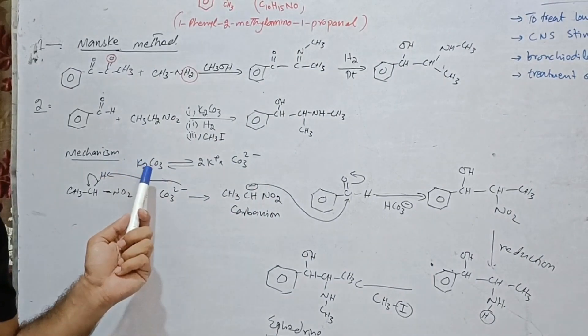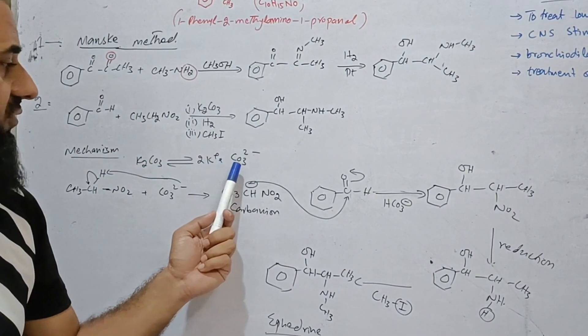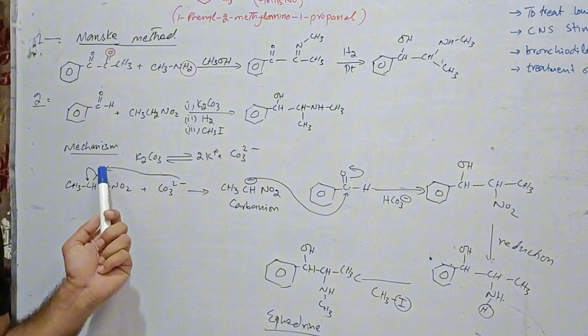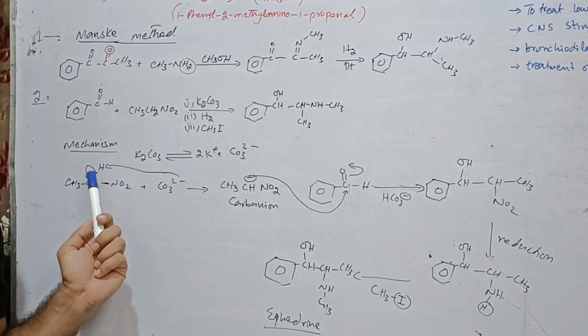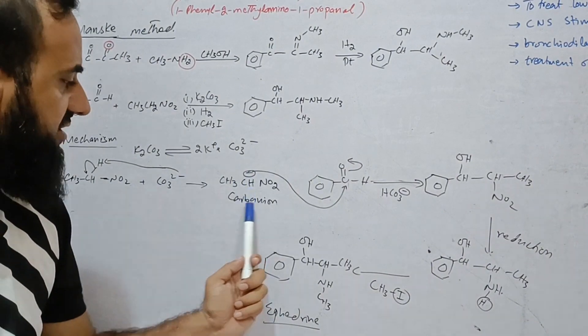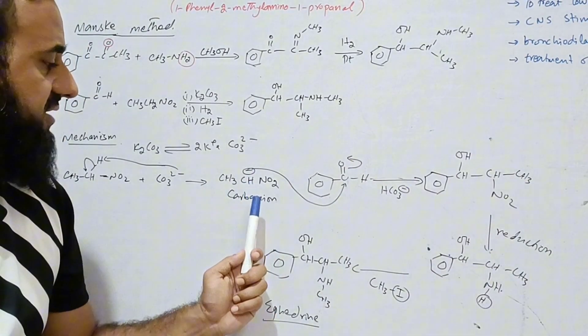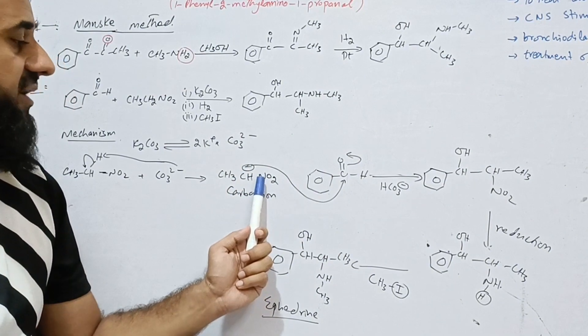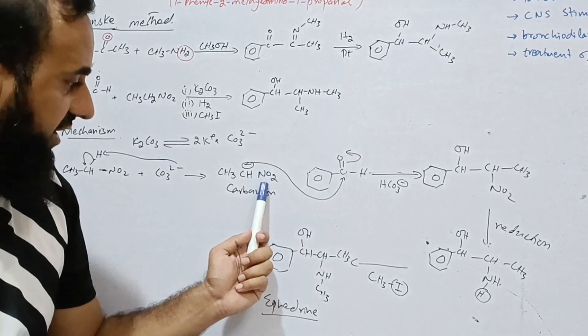If we see the mechanism, potassium carbonate provides carbonate, which extracts hydrogen from the nitroethane and carbanion is formed. This carbanion is resonance stabilized by this electron withdrawing group.